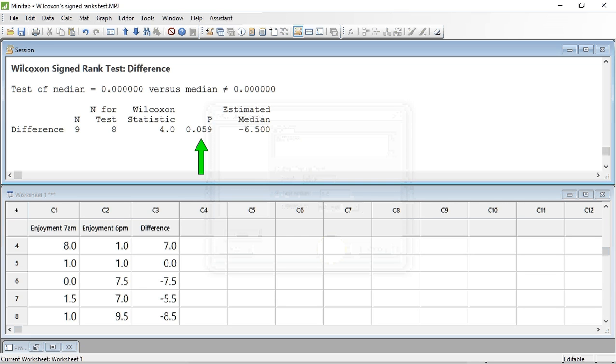The p-value is equal to 0.059. So, a value of 0.059 means we do not reject the null hypothesis and conclude that there is no significant difference between the Median Chocolate Enjoyment Rating at 7am compared to 6pm.